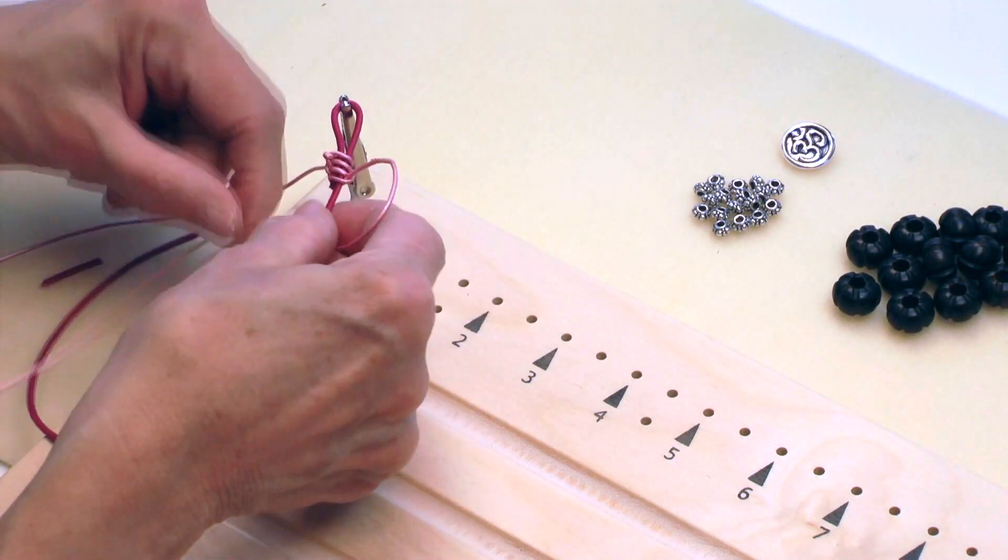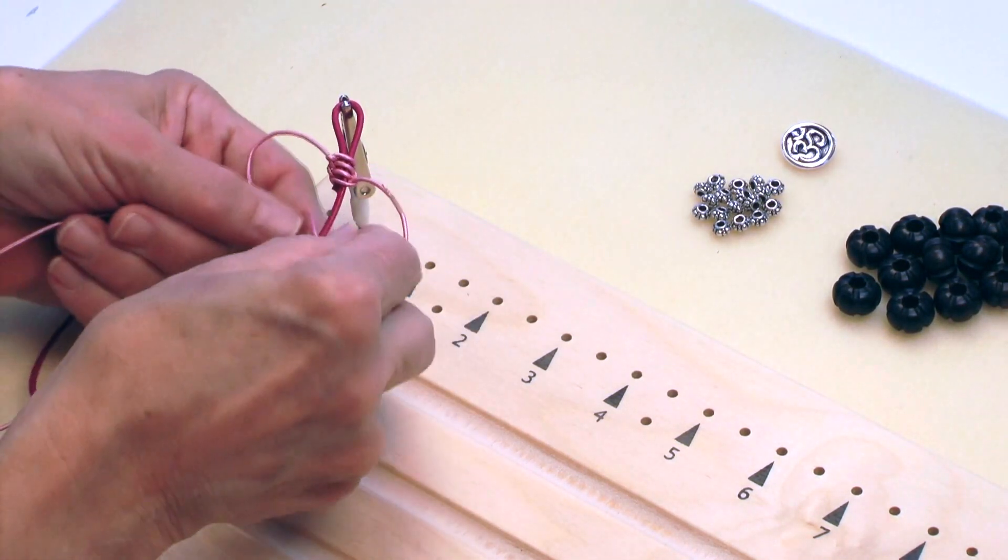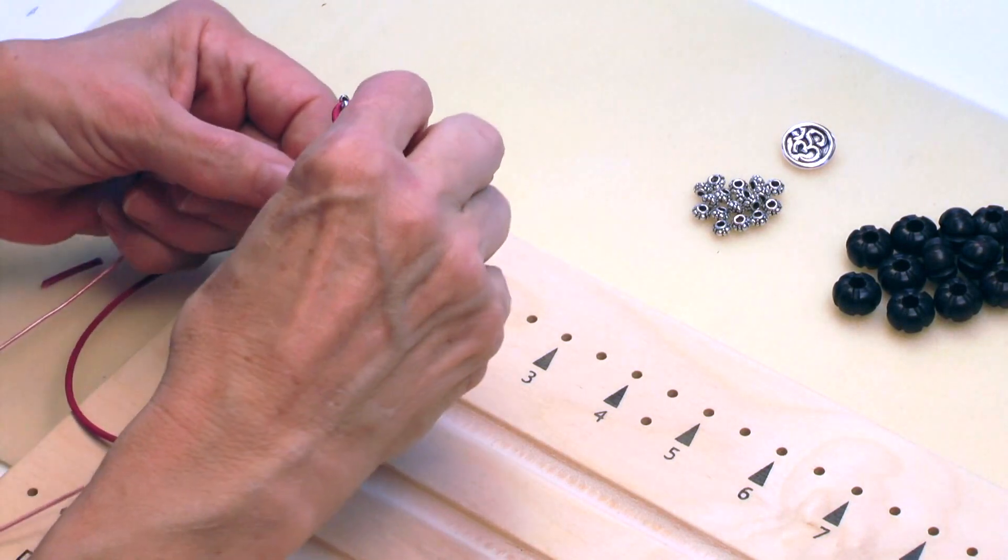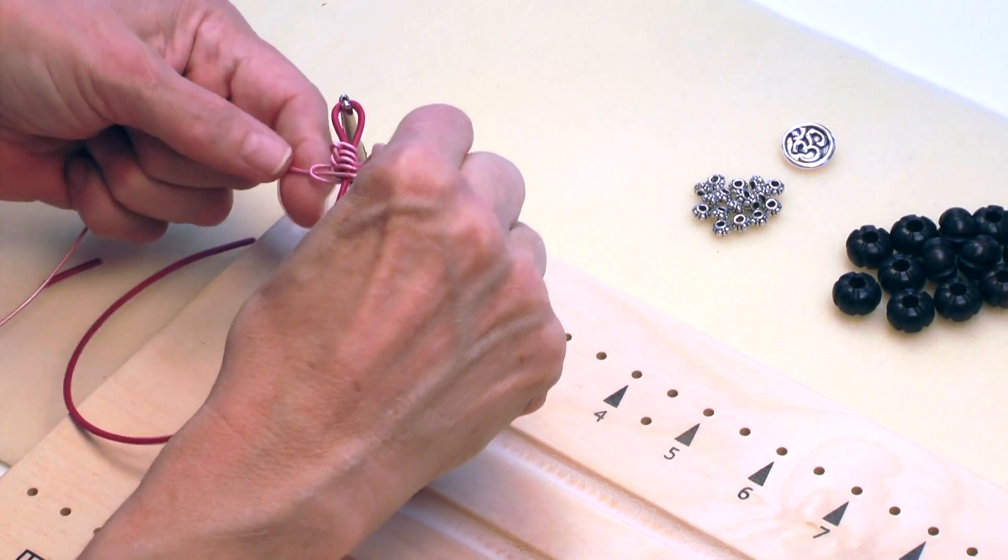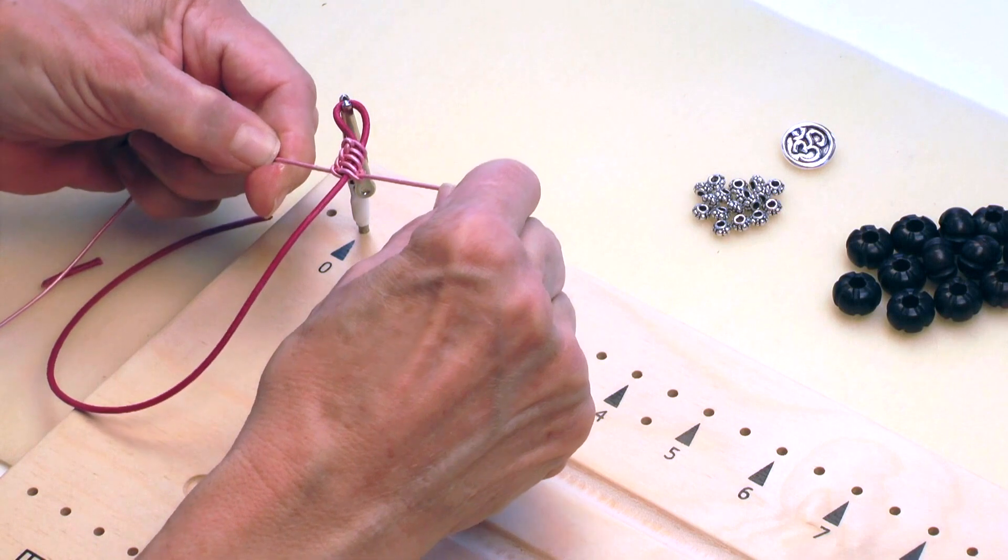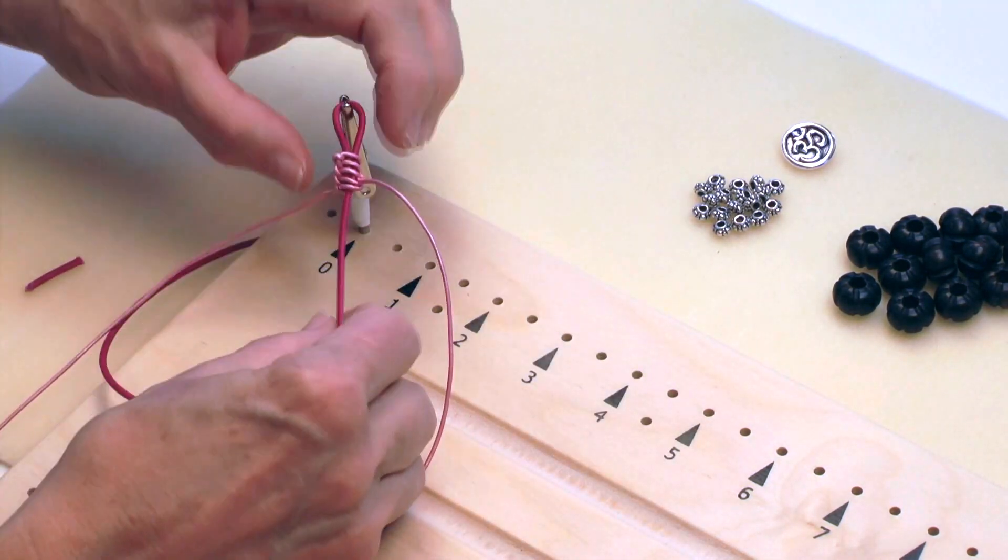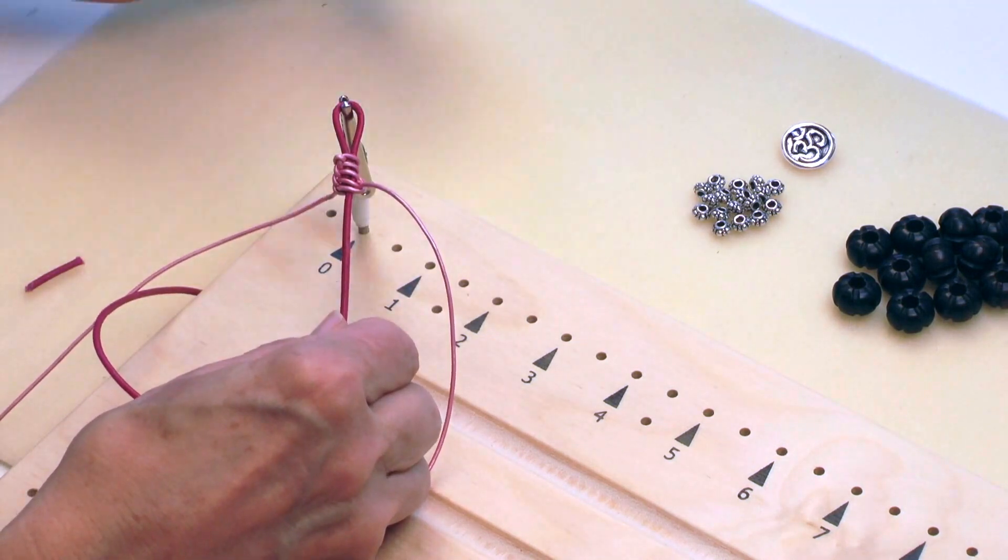And I'm going to do another knot over, over, under, through. And I'm just going to take a second to make sure that I set this last knot before my beads right on top of my tail. And you see it's completely hidden.